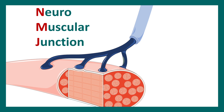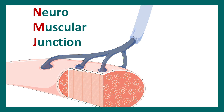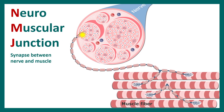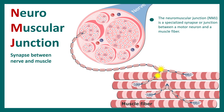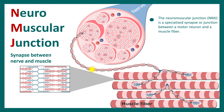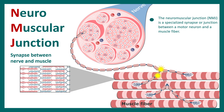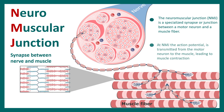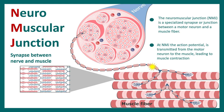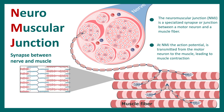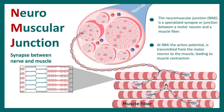In this video we'll talk about the neuromuscular junction. The neuromuscular junction is simply the synapse between the nerve and the muscle — it's a specialized synapse. At the neuromuscular junction, the action potential or stimulation from the nerve terminal reaches the muscle and leads to muscle contraction.